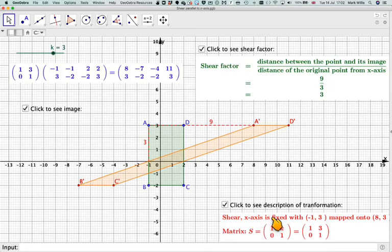And the general form of the matrix where the x-axis is fixed is 1, k, 0, 1. In this case, it's 1, 3, 0, 1.